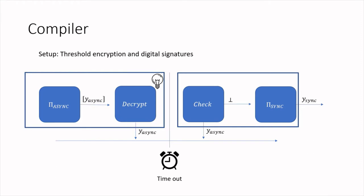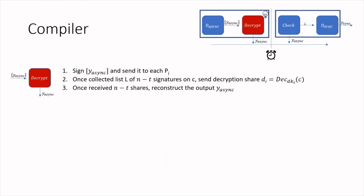How does the decrypt box work? When a party PI receives the ciphertext containing y_async, it signs it and sends the signature to every other party. Once a party has collected n-t signatures on the same ciphertext, it sends its decryption share. Once a party gets n-t decryption shares, it can reconstruct the output. By a standard quorum argument, if there are fewer than n minus 2 times small t corruptions, there cannot be two lists for different ciphertexts, and if the asynchronous protocol ran correctly, this is the correct ciphertext.